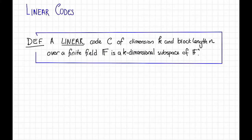Our first definition is of a linear code. So a linear code C of dimension k and block length n over a finite field f is just a k-dimensional subspace of f to the n.